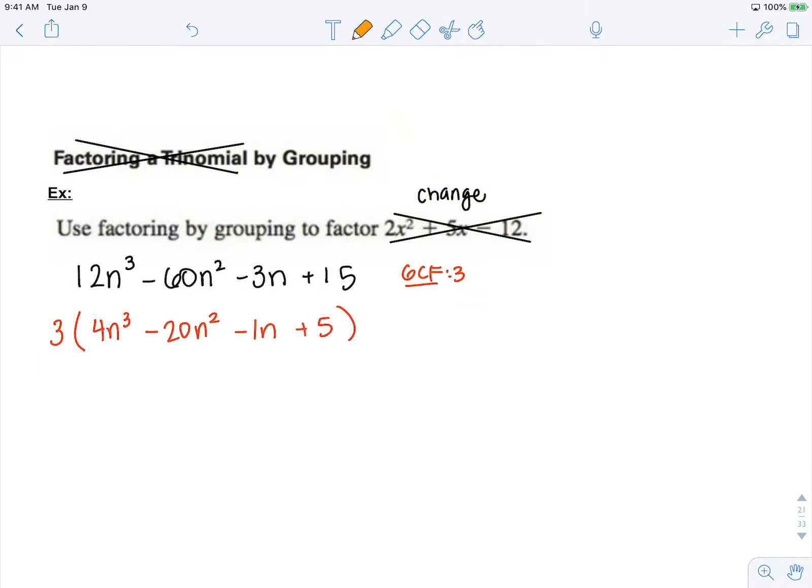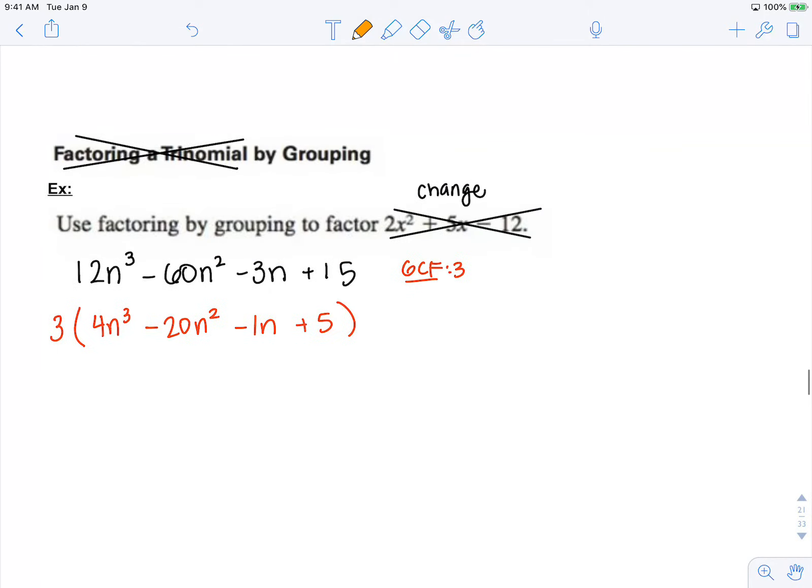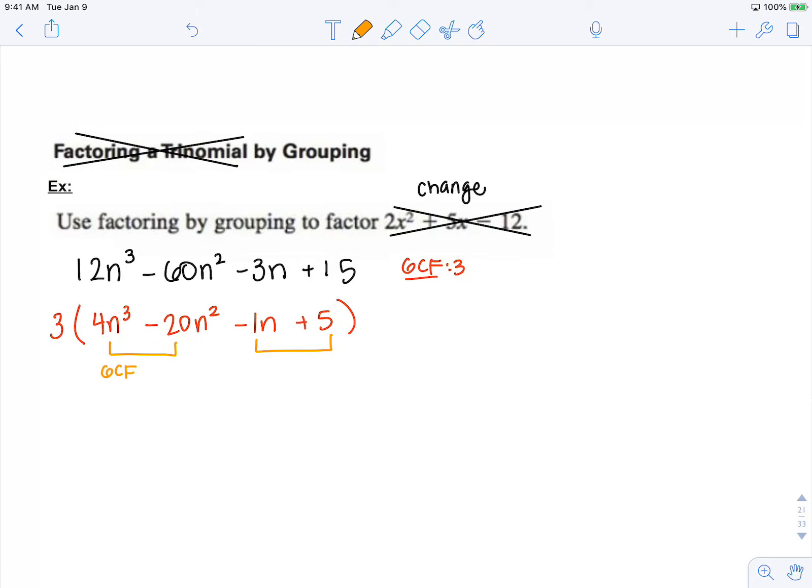Now, I will group what's left. Group these two and group these two. The GCF of this group is 4n squared. The GCF of this group is negative 1.